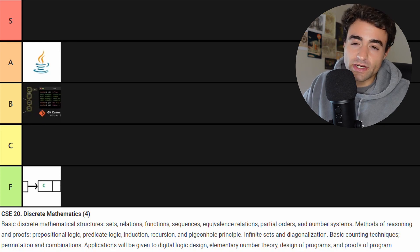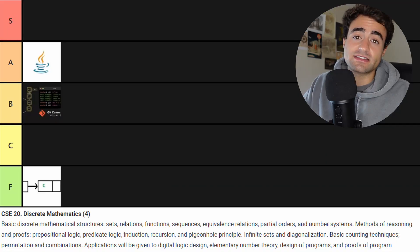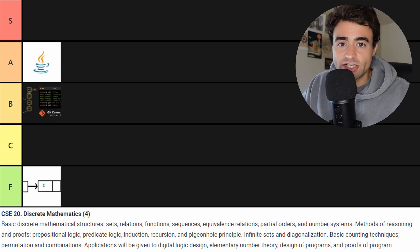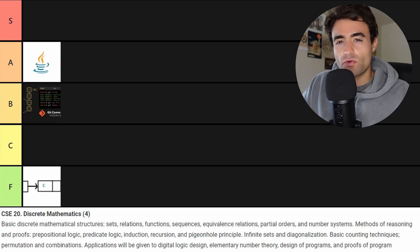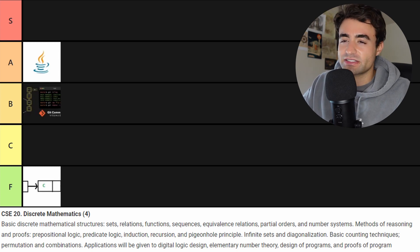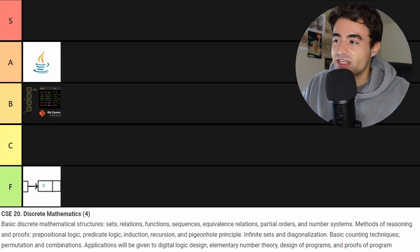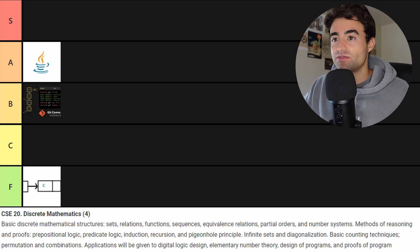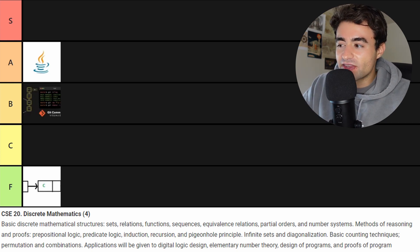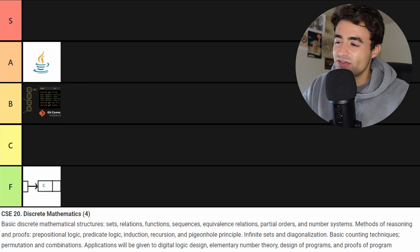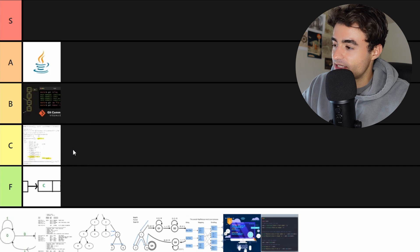This one is CSE 20, which is discrete mathematics. Computer science students do have to take math classes, and this is one of those computer science math classes. Discrete math is a big subject in a lot of areas of computer science — you cover things like induction proofs, permutations, things like that. There weren't really any programming assignments; all of the homework assignments were problem sets dealing with, you know, how do you prove this using induction, how are you proving this recursion, how are you proving this runtime. Honestly, I didn't love the class. It was sort of hard to grasp in the beginning, so I think it's going to be C tier.